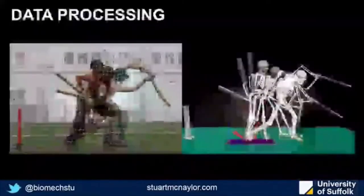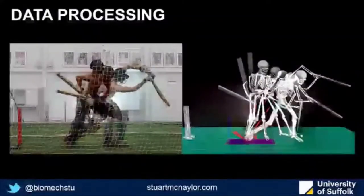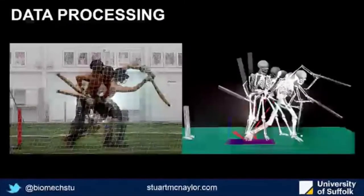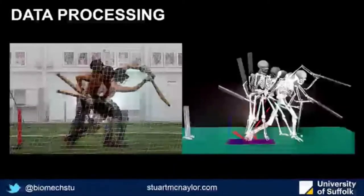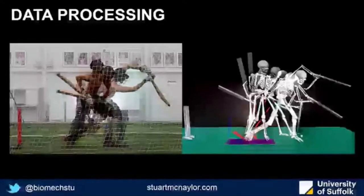That allowed us to convert what the players did into a biomechanical model — a 14-segment model of their performance — and therefore get various joint angles and joint angular velocities that we can use to determine what technique maximises bat speed.